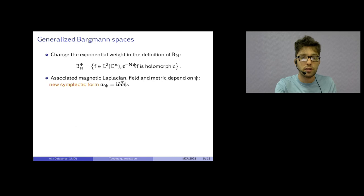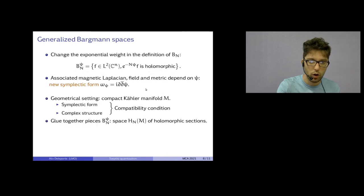Then, associated with this weight psi, you can produce a new space Bn^ψ. And so, this is, again, the lowest Landau level of the associated magnetic Laplacian. Where the magnetic field and the metric depend on psi, you find, in particular, a new symplectic form, a new magnetic field, which is i dd-bar of psi, which was the standard one in the case where psi is just z squared.